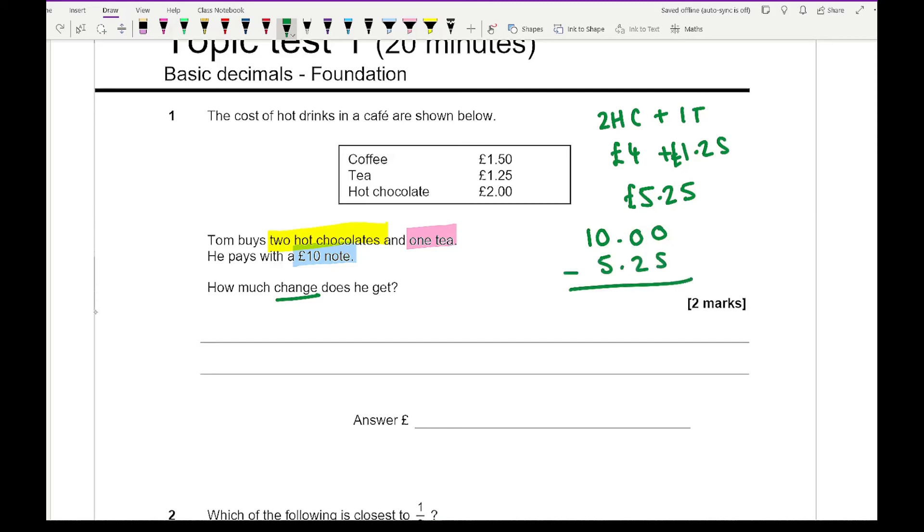Either you can do it mentally or you can write your answers down. If you borrow one, borrow one, borrow one, we end up with £4.75 as the change.